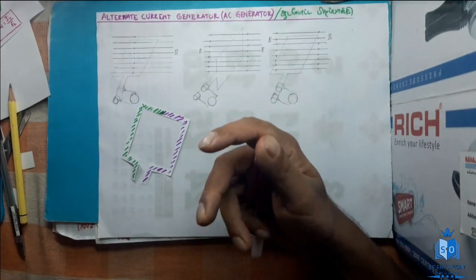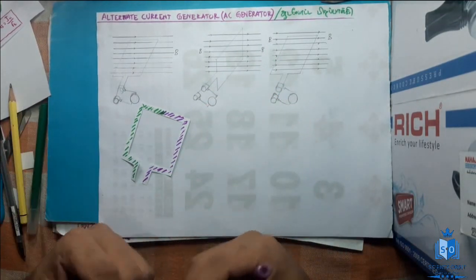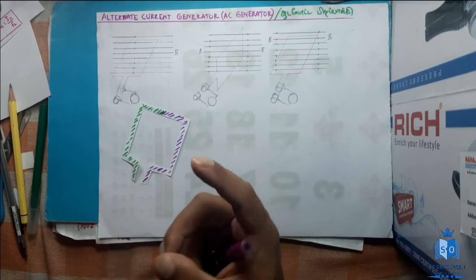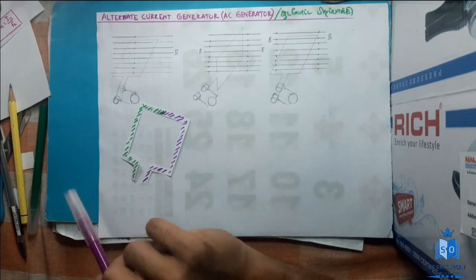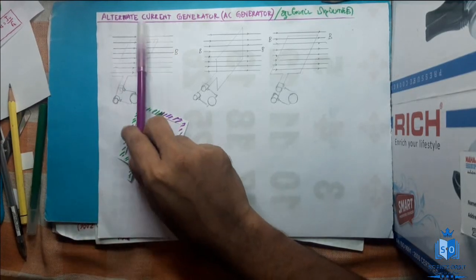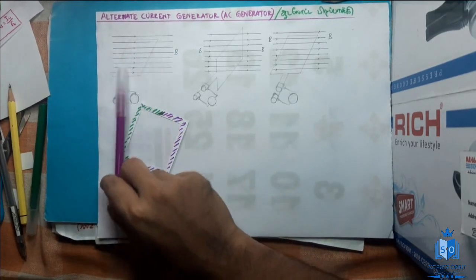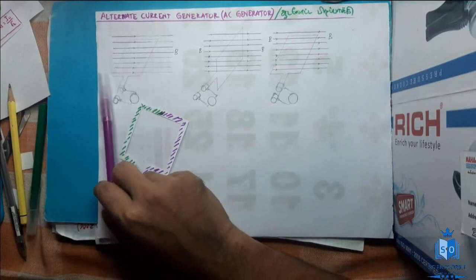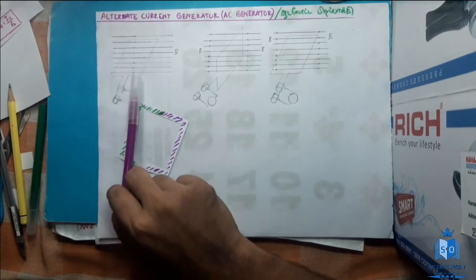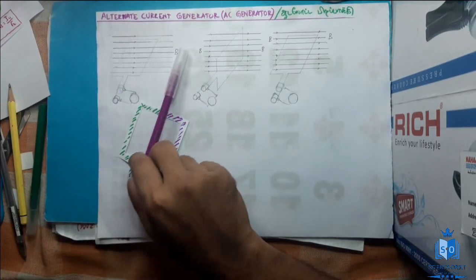We are going to study how we are going to generate alternate current. How can we generate current? We can generate current by rotating a rectangular wire loop in a magnetic field.